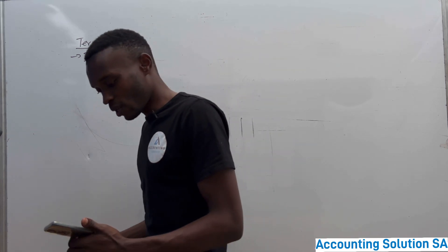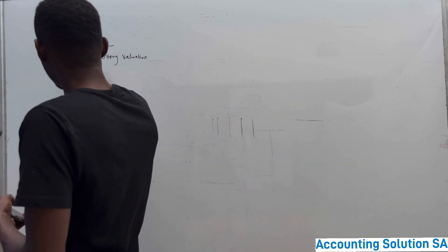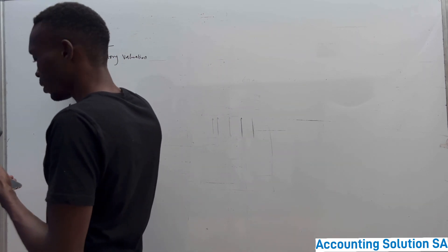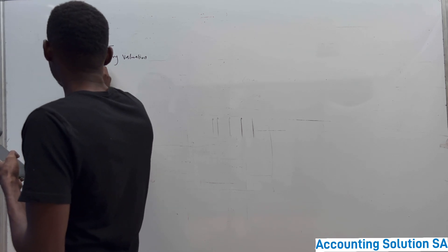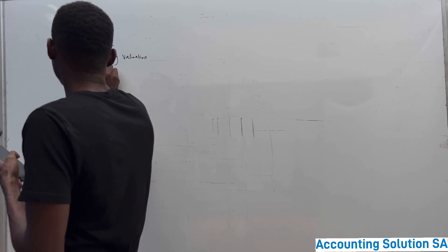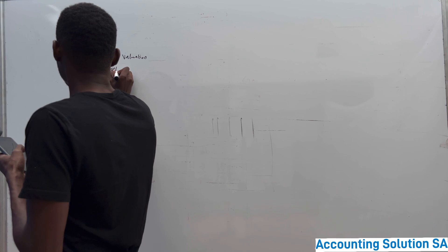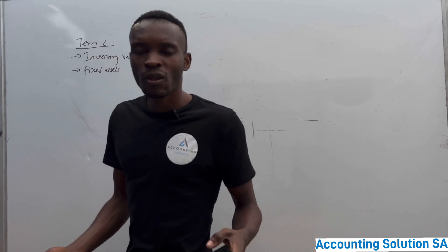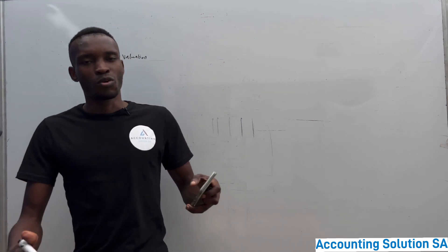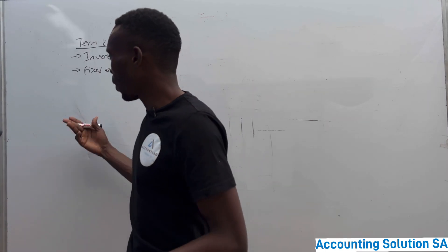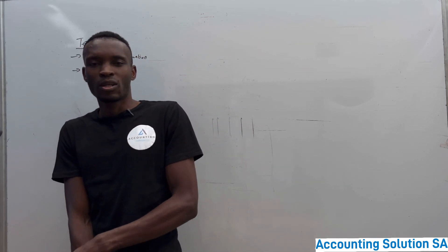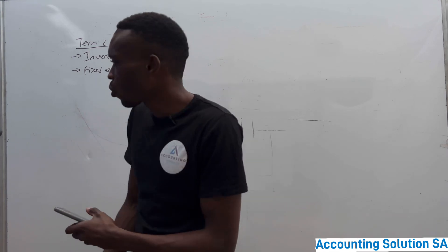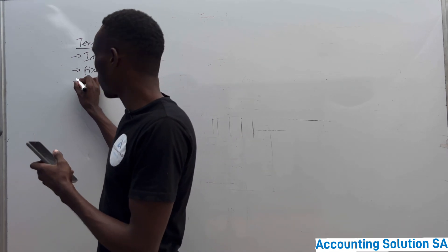The next chapter you are going to learn is fixed assets - also known as tangible assets or PPE. You are going to calculate depreciation, accumulated depreciation, carrying value, and so on.